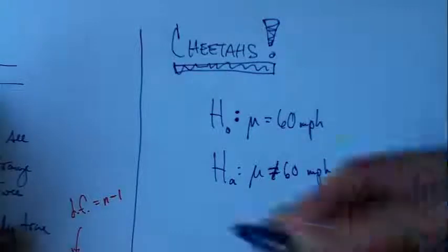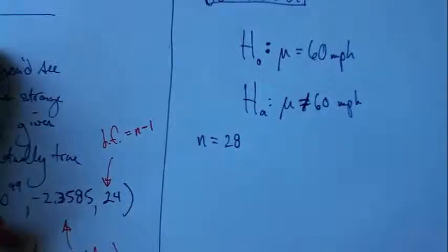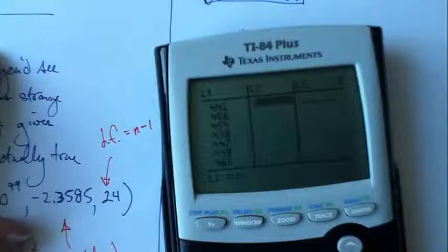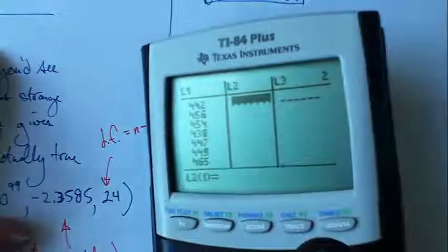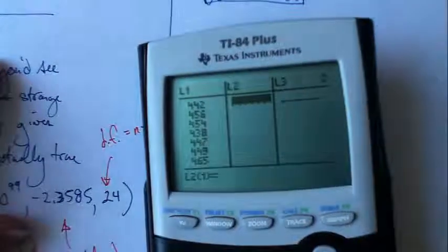So yeah, okay. So what we'll do is we'll take a sample of 28 cheetahs. I watched 28 cheetahs run really fast. And then I clocked them with my radar gun. And here are - I'm going to put those speeds, those top speeds here in list number 2 in my Texas Instruments 84-plus model calculator.